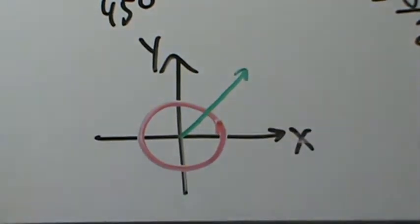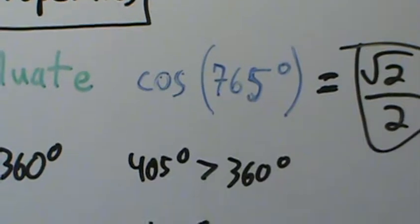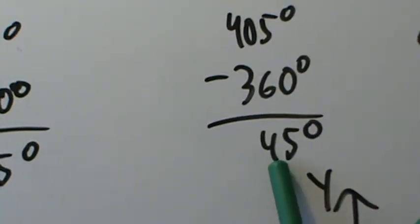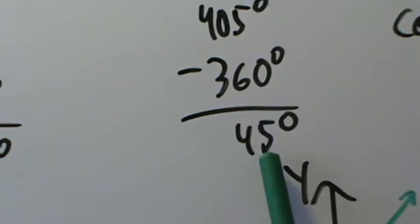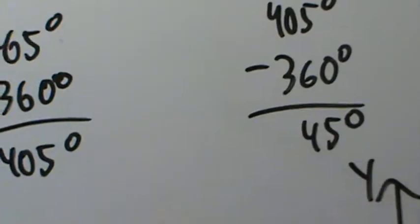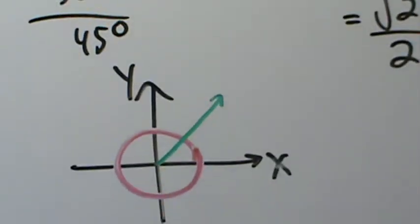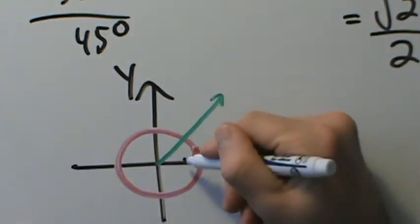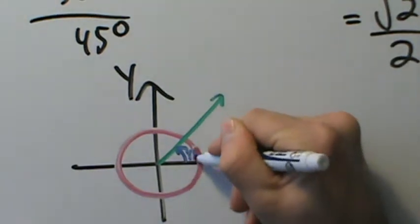So notice, we started with 765 degrees, and we had to subtract 360 degrees twice to get to 45 degrees. So if we start at 45 degrees, then we have to add 360 twice to get to 765. So if we do that, so this here is going to be 45 degrees.